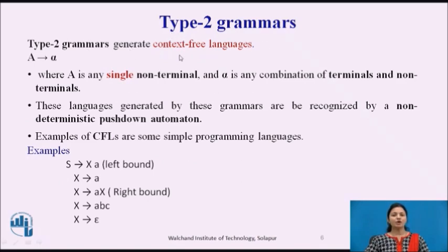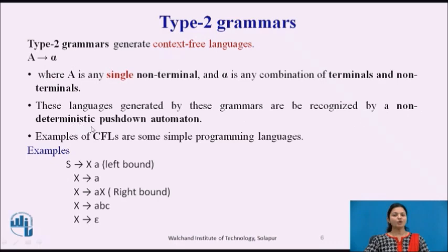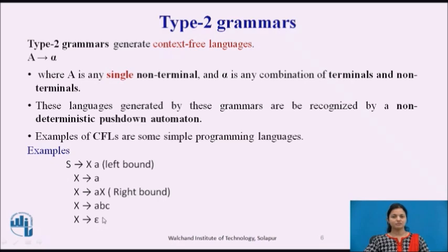Type 2 grammars generate context-free languages. The format is A → alpha, where A is any single non-terminal and alpha is a combination of terminals and non-terminals. These languages are recognized by non-deterministic pushdown automata, also described by CFG. Examples of context-free languages include simple programming languages. For instance: S → XA (left-bound, as X is on the left side), X → A, X → AX (right-bound), X → ABC, and X → null.